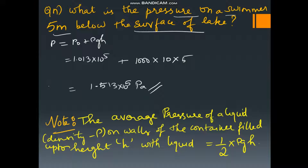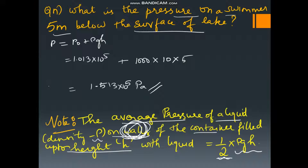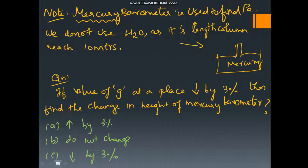Now one special formula: the average pressure of a liquid of density rho on the walls of a container filled up to height h is (1/2)ρgh. Deriving it requires integration, so just remember: average pressure of a liquid on the walls = (1/2) × ρ × g × h.